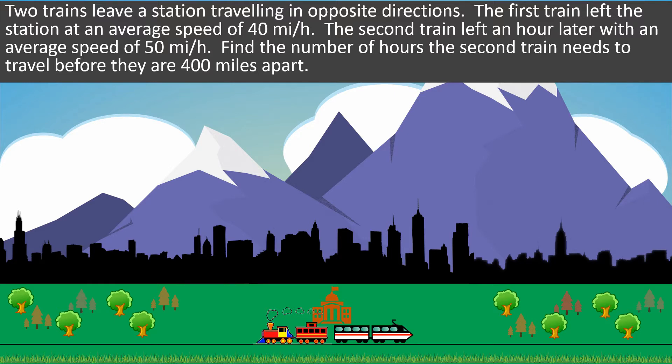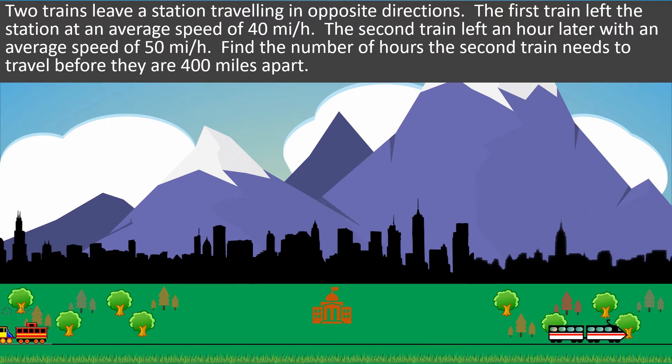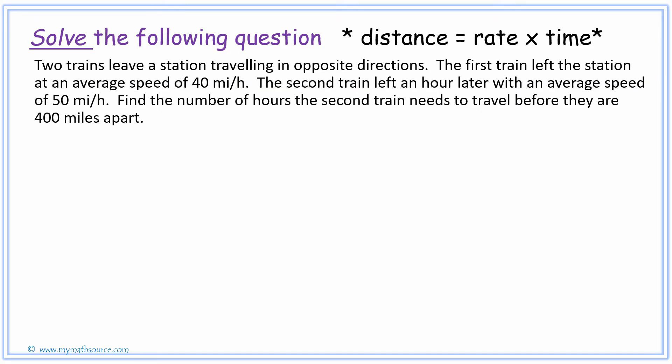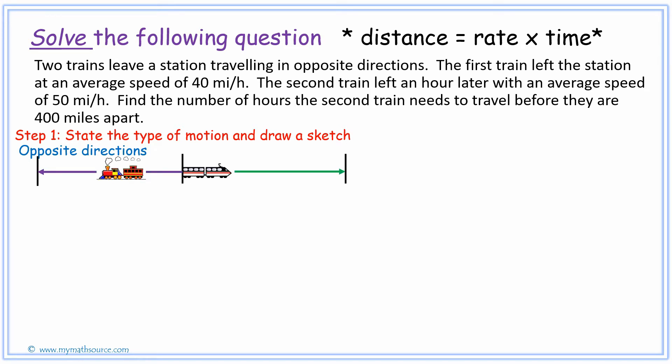To give you an idea, we have a little graphic here, a little animation that helps us see what is really happening. This is another question with opposite directions. You see here the trains are heading away from each other with one train starting later than the other and traveling a bit faster. Let's go over how we solve this problem. Remember the first step is to find out the type of motion and draw a sketch. We notice that it's an opposite direction, but they are not coming towards each other like the previous video we saw. This time the objects are going away from each other.